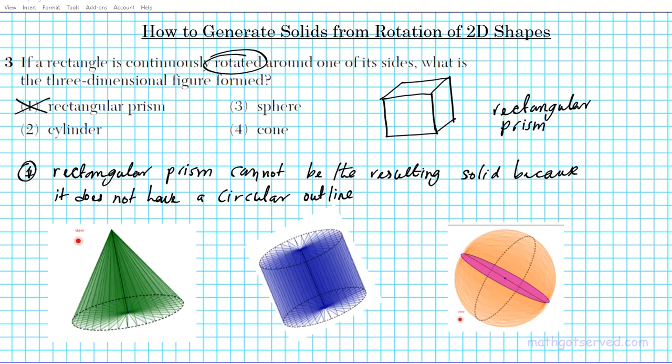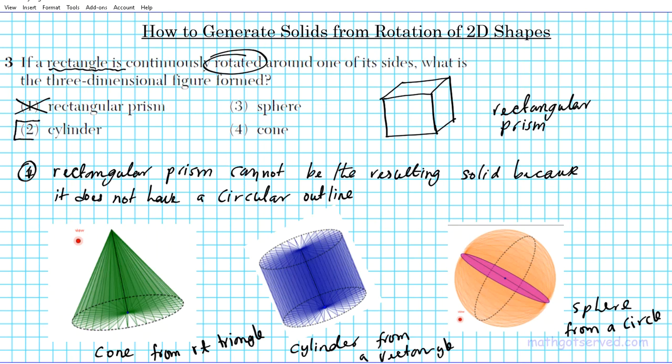So I captured the three figures that we generated using the GeoGebra online software. Let's go ahead and write down their names. This guy right here is a cone. This is a cylinder. And this is a sphere. So what did we get the cone from? We got the cone from a right triangle. And then we got the cylinder from a rectangle. And then we got the sphere from a circle. So the question asks, which one do we get when we rotate a rectangle continuously around one of its sides? The answer to question number three is option two, a cylinder.